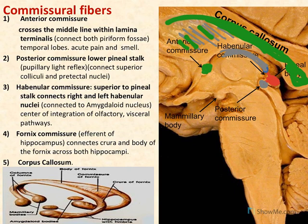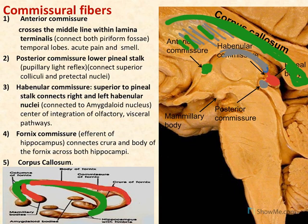We have two fornices, one inside each cerebral hemisphere. Each one consists of an anterior column, body, and crura — sometimes called the posterior column of the fornix. Between the two crura, we find the fornix commissure, also called the hippocampal commissure because it is related to the hippocampus. All these parts are related to the limbic system.